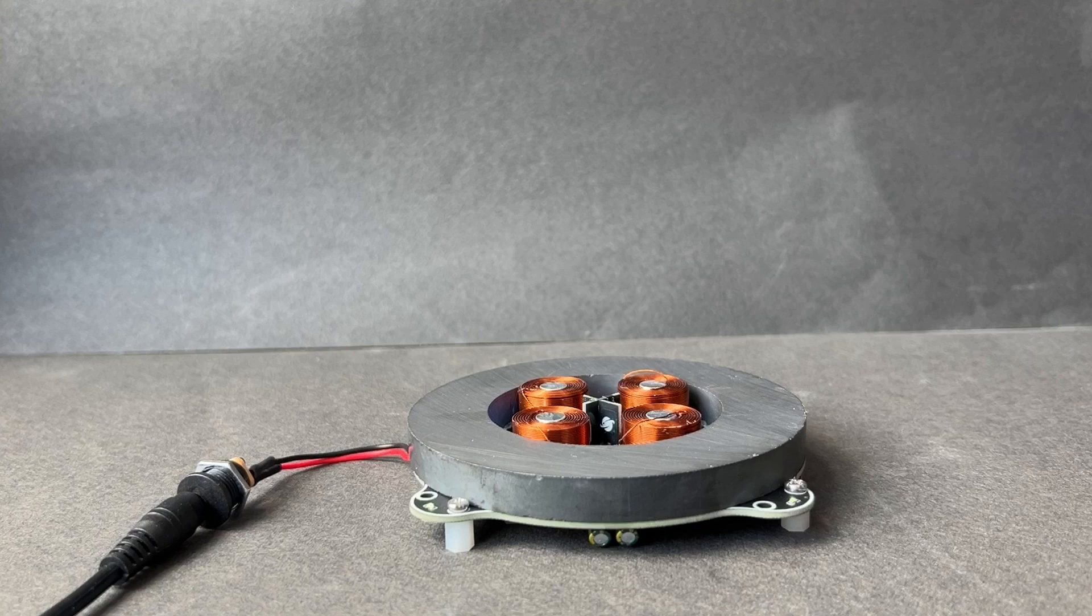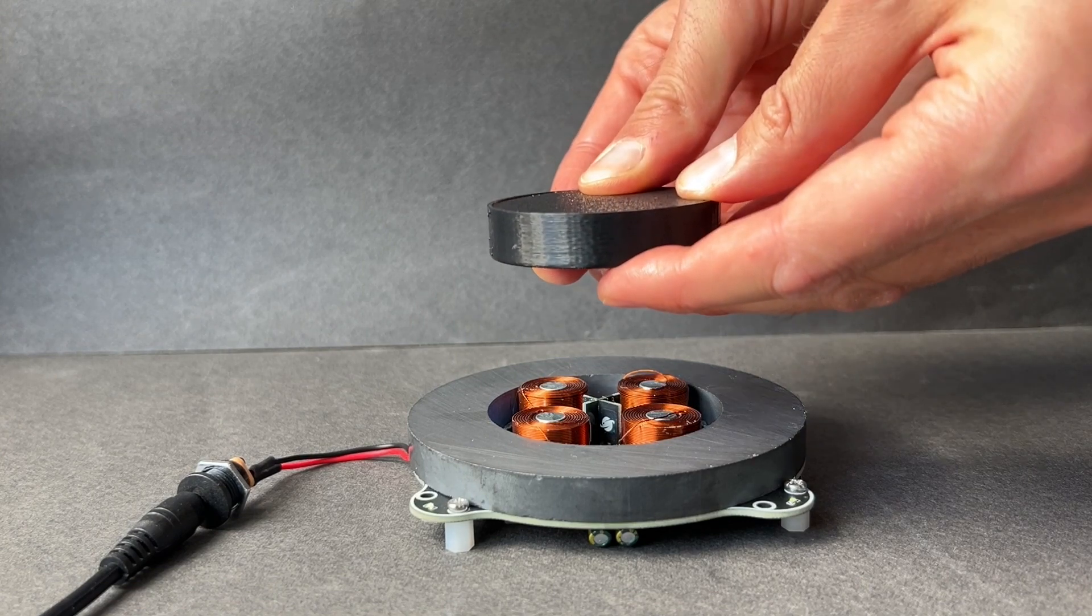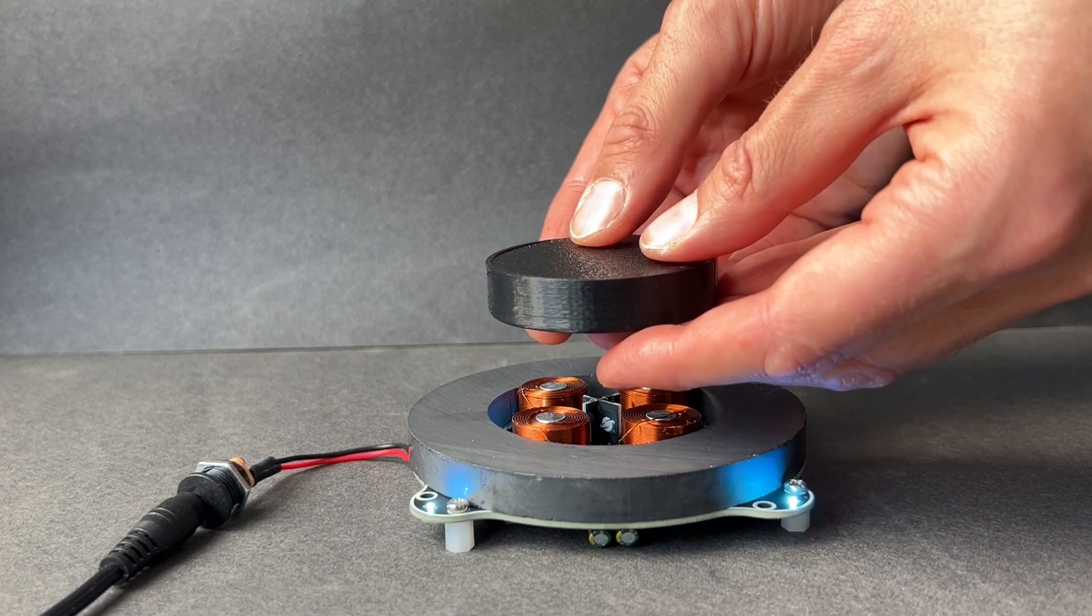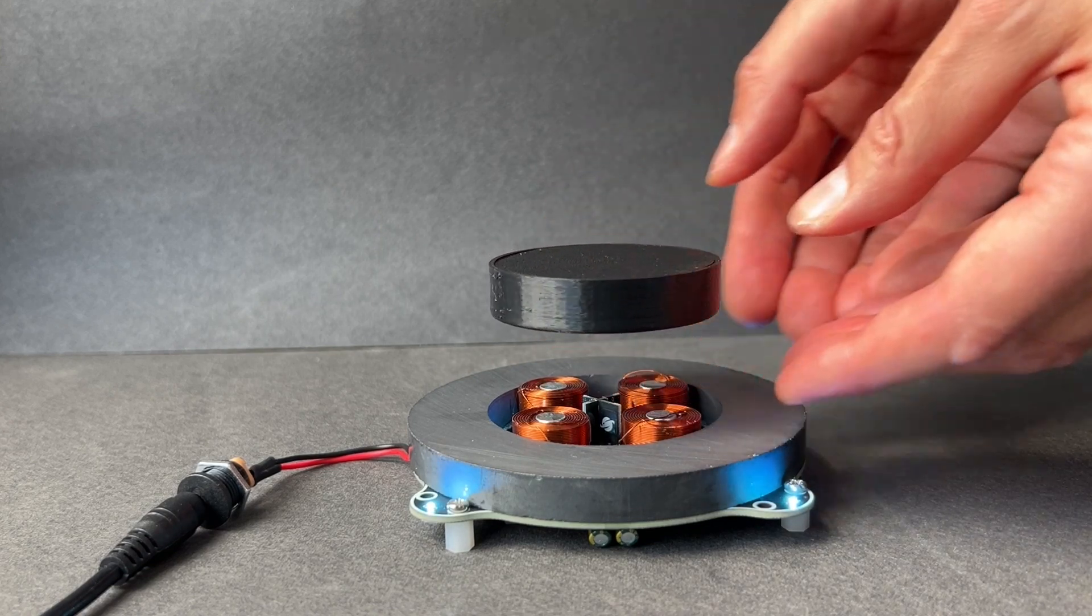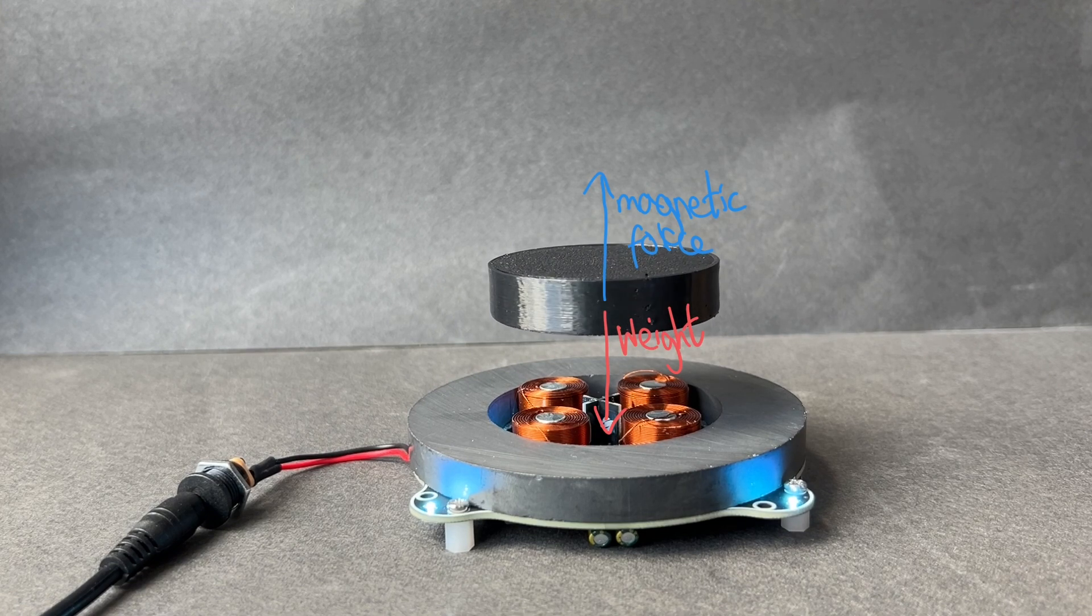The basic idea is quite simple to understand. The large ring magnet produces a magnetic field which repels the floating magnet, creating a force upwards which balances out the force of gravity or weight acting down on the magnet, and it floats.